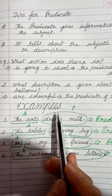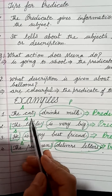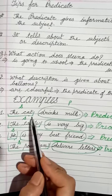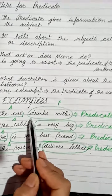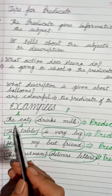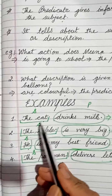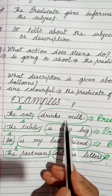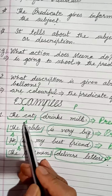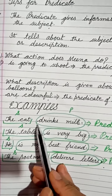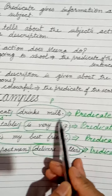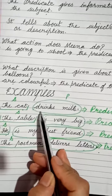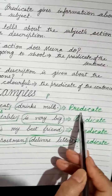Let's look at some examples. First: 'The cat drinks milk.' I have underlined the subject and encircled the predicate. Who drinks milk? The answer is the cat — the cat is the subject. And what action does the cat do? Drinks milk — that is the predicate.